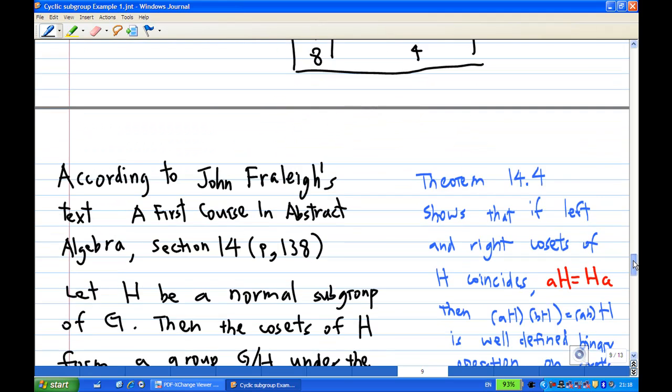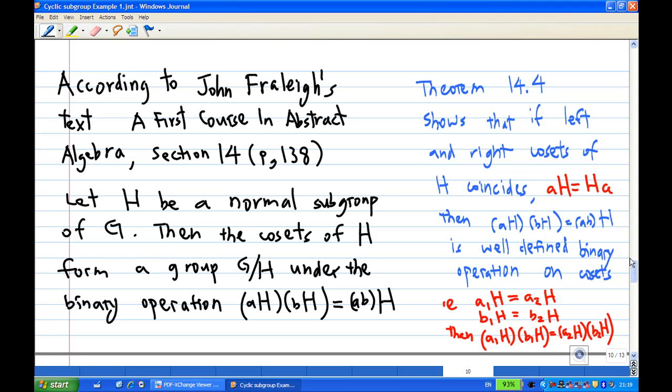Next we are going to find the quotient group. According to John's text, section 14, page 138, if H is a normal subgroup of G, then the cosets of H form a group G over H under the binary operation aH times bH equals abH.